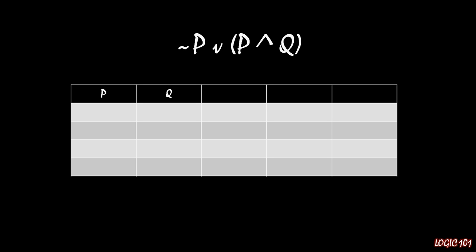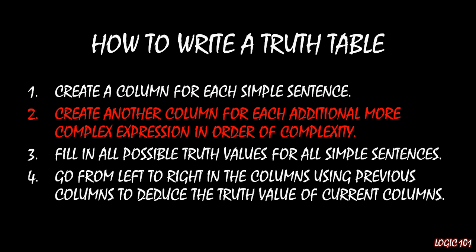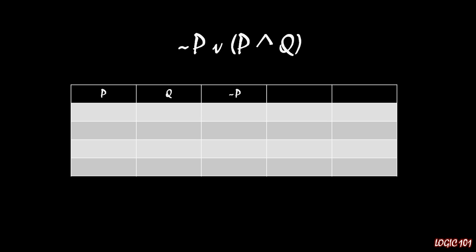The second step is to create another column for each additional, more complex expression in the order of complexity. So you'll notice here that on the left side of the disjunction, we have a not P, so we can write a not P as one of the columns. On the right side of the disjunction, we have P and Q, and so we want to go with that first because it's inside of those parentheses.